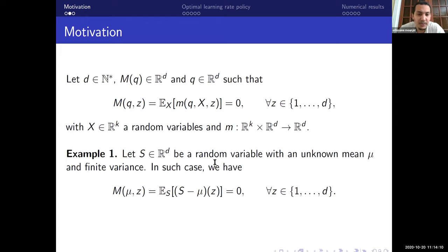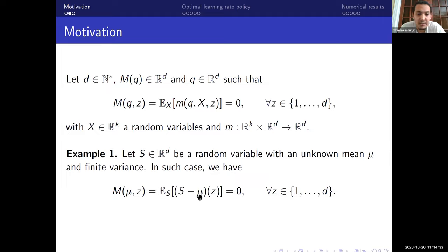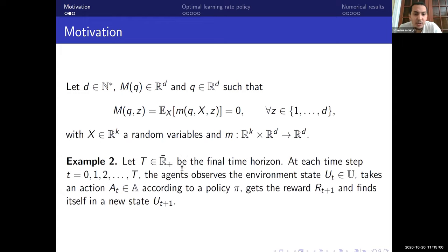We can find this type of equation in many contexts. First example: estimating the mean μ of a random variable s. Since by definition E[s] = μ, we can write this as E[s - μ] = 0, which matches our equation M(q)=0 by replacing q with μ and x with s, and taking m(q,x) = x - q.